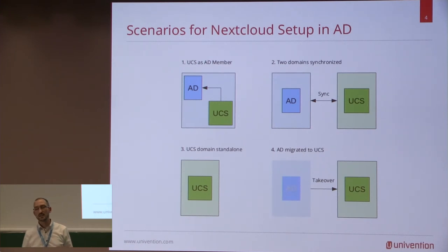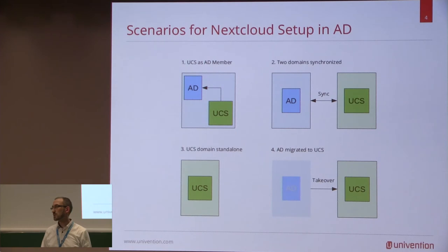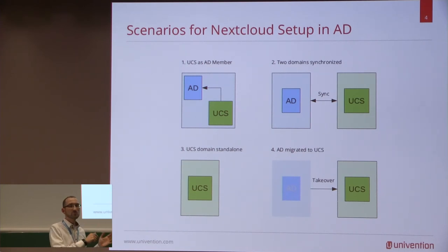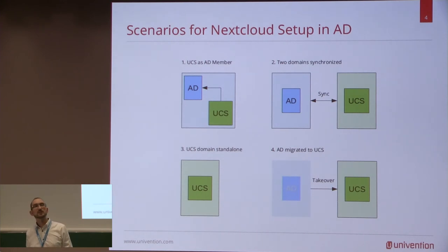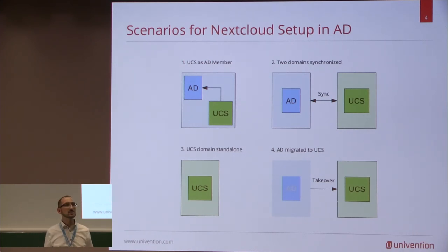The third scenario is a standalone installation, which is the default when you do not change any settings during setup. The fourth option is you can use the appliance or Univention Corporate Server itself to migrate your existing Active Directory environment to Univention Corporate Server — a drop-in replacement — without going to your Windows clients and changing settings there. You can just change it in place.